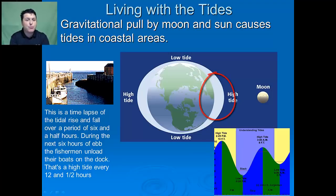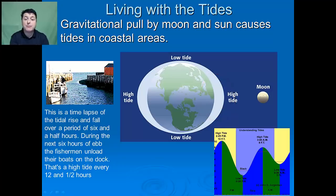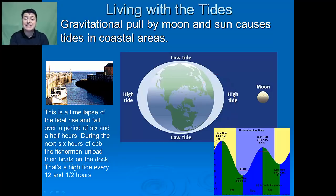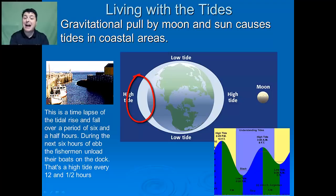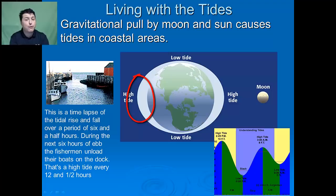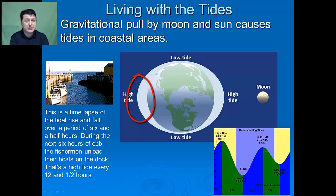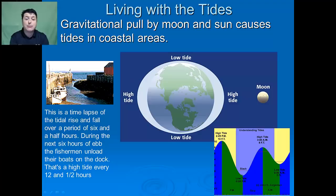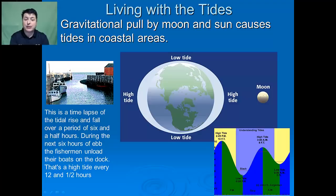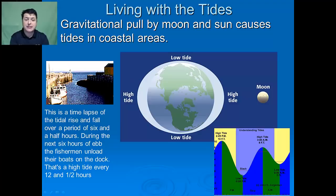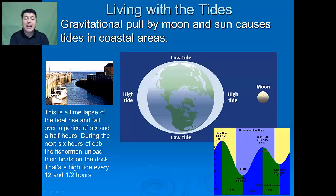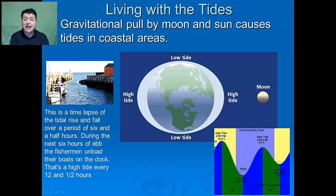The water on the side of the Earth facing away from the Moon has a less strong pull. As a result, this left-behind water forms a second bulge. In places where there are tidal bulges, high tide is occurring along the coastlines. In places between the bulges, we have low tide occurring.